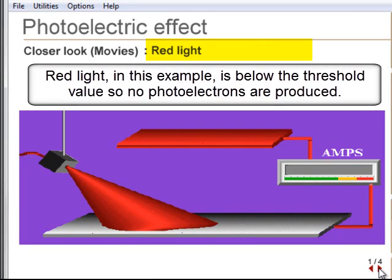Red light is below the threshold energy for the electron-metal binding, and no current is produced.